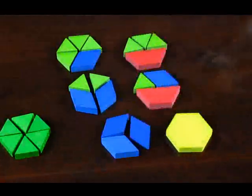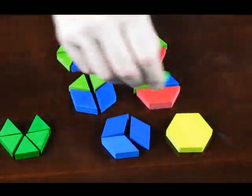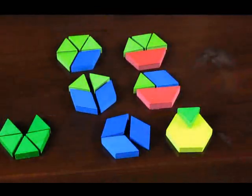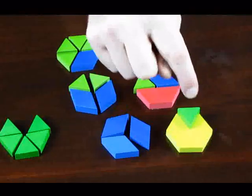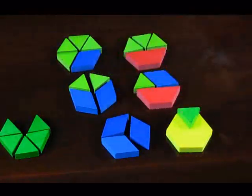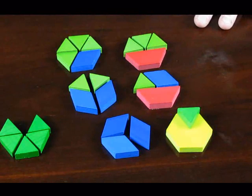And by the same reasoning, each of these pieces, the green triangles, each of them are the same size so they're equal sized pieces. Each of them represents one sixth of the entire yellow hexagon.